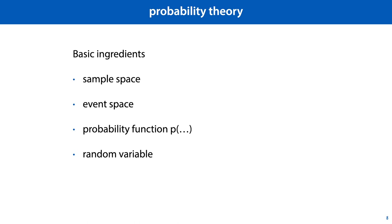All of that was about the interpretation of probabilities. The mathematical definition of probability, studied in the field of probability theory, is entirely distinct from the question of what the definition of probability is when we apply it to the real world. Both frequentists and Bayesians use the same mathematical framework to express probability as a number between 0 and 1. The only difference between them is in what this number is taken to express. We'll go through the basic ingredients of probability theory quickly. These include the sample space, the event space, a probability function, and the use of random variables.